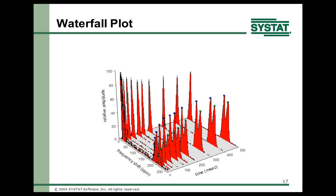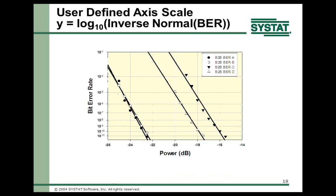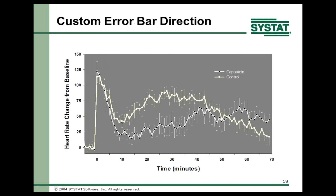You can do custom axis scales. Any axis scale defined by an equation can be used in Sigmaplot. For example, a bit error rate axis scale used in communication technology is the log base 10 of the inverse normal distribution equation. Anything you can write as an equation, you can create an axis for. This also shows the custom error bar direction feature — both directions, then up, then down — controlling direction for each data point.